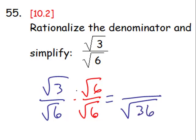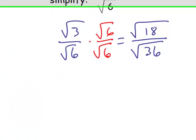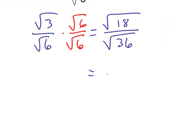The numerator, these are both radicals, and they can combine to become the square root of 18. Now, the square root of 36 is the whole number 6, and that's what the purpose of rationalizing the denominator is.